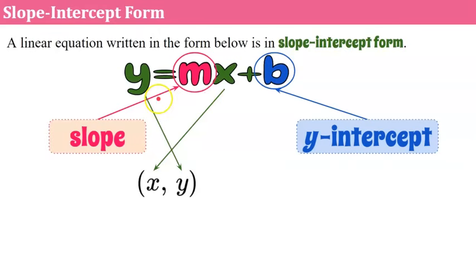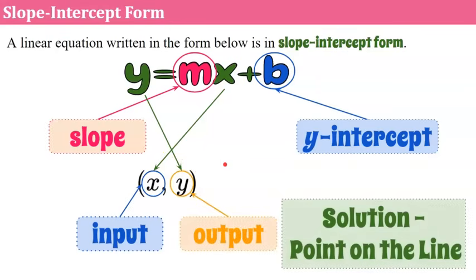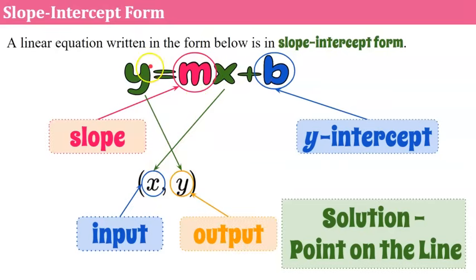X and y remain an ordered pair — a specific input mapped to a specific output that represents a solution or a point on the line. A line is an infinite amount of points all connected together, and every x and y ordered pair on the line is a solution, which can be obtained by putting any x value in for x, evaluating and solving for y, making an ordered pair.